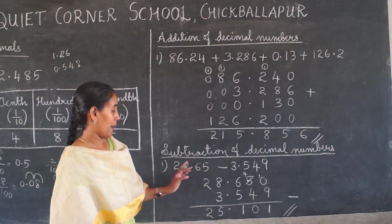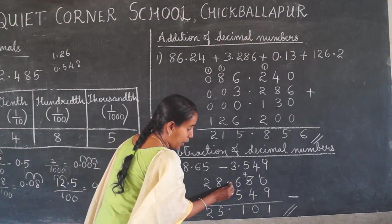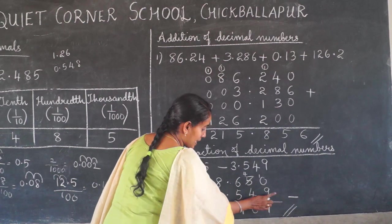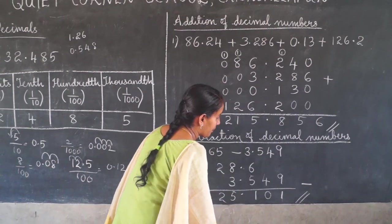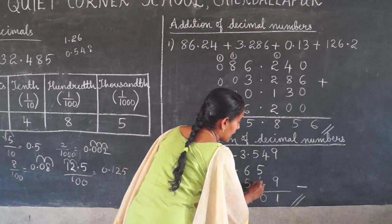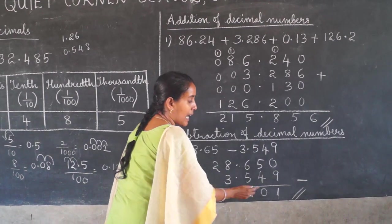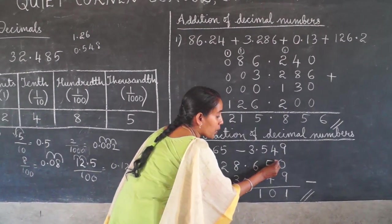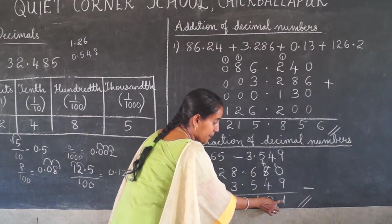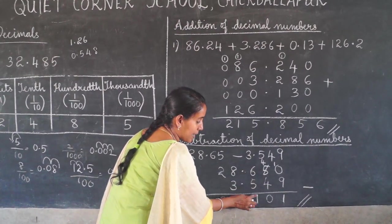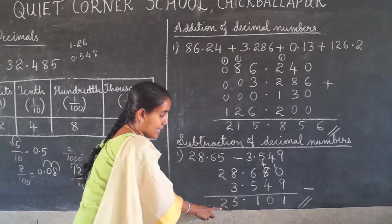Now how to subtract decimal numbers? For example: 28.65 minus 3.549. Here there is no digit above the 9, but you cannot leave it — you have to treat it as 0. Then you borrow: this 5 will become 4, and 0 will become 10. So 10 minus 9 is 1, then 4 minus 4 is 0, then 6 minus 5 is 1. The decimal point comes, then 8 minus 3 is 5, and the remaining digit is 2. So the answer is 25.101.